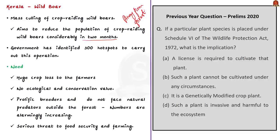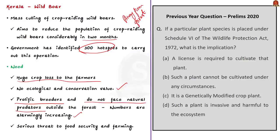The government has identified 300 hotspots to carry out this operation. The wild boars are causing huge crop loss to the farmers. According to experts, wild boars that live far away from the forest boundaries are of no economical and conservation value. Another problem is they are also prolific breeders and they do not face natural predators outside the forest, so their numbers are alarmingly increasing. They pose a serious threat to food security and farming. This is why the Kerala government is planning to conduct a mass culling operation.